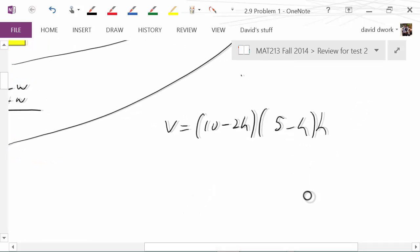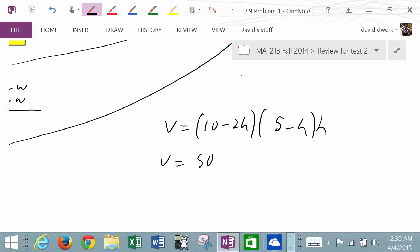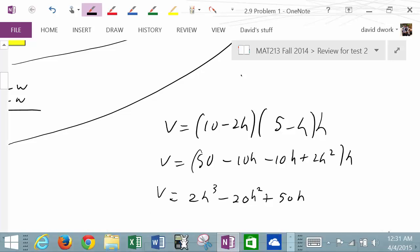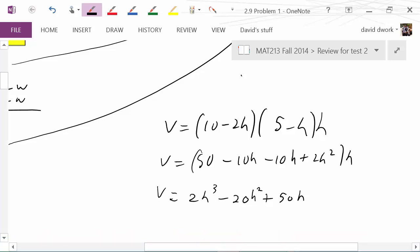Now we have a volume equation we can work from. If our goal is to maximize volume, that's code word for let's take the derivative. Now it's your choice how you might want to do this derivative, if you want to simplify first, foil or distribute. I'm going to go ahead and foil a little bit, so I'm going to pause the video and have it all foiled out.